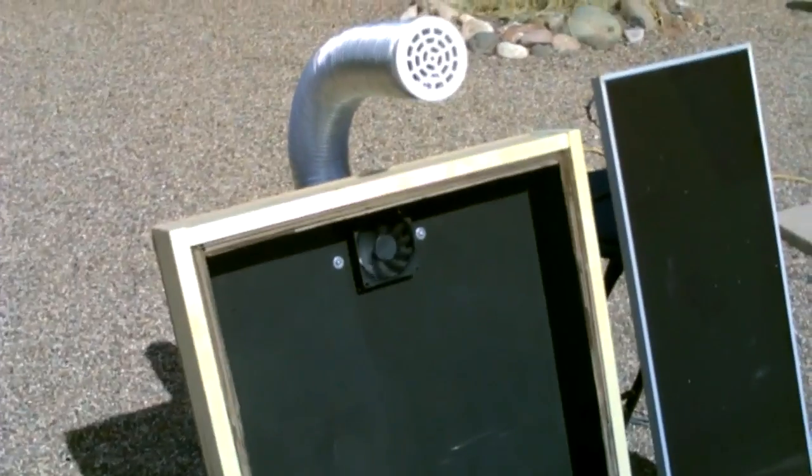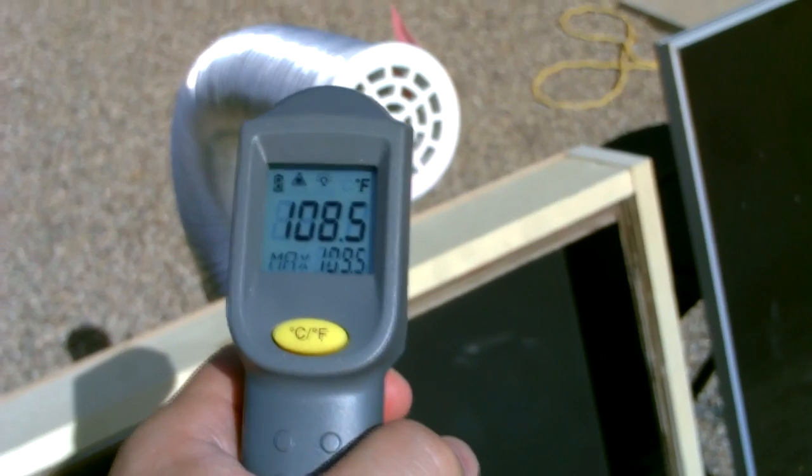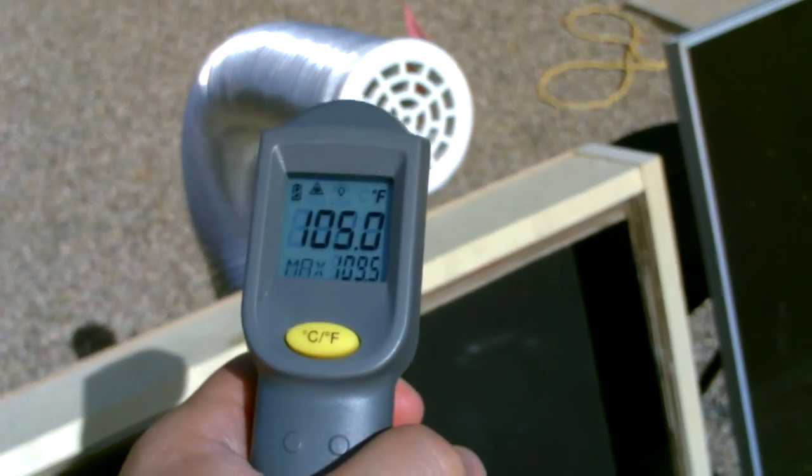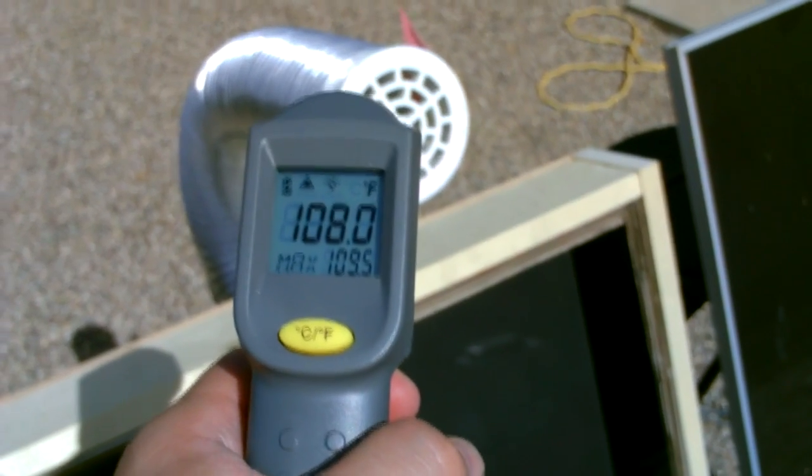Okay, I went ahead and removed the screen temporarily just to do some comparative temp measurements. So we'll do with the screen and without. Highest I'm getting is 109.5, a lot colder when you don't use the screen absorber plate in there.